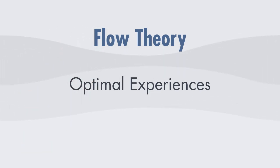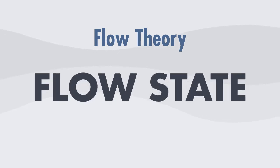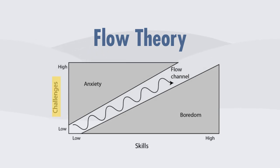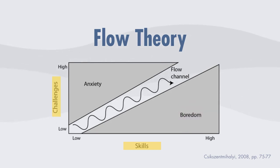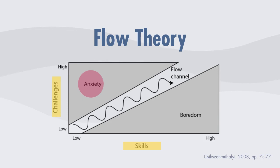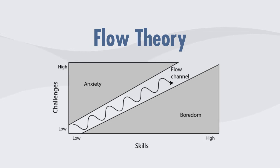So how does one get into these optimal experiences or flow states? First you need to look at how challenging a task is compared to one's skill level. If a task is not very challenging and your skill level is high, it's probably going to be pretty boring. If the task is very challenging and your skill level is pretty low, it's probably going to produce some anxiety. So the balance between challenge and skill — between boredom and anxiety — that's your flow state.